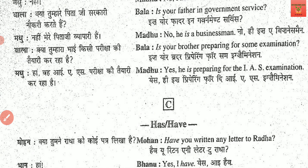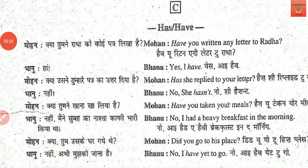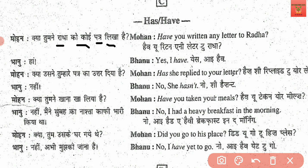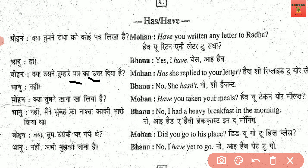Let's see the next conversation in which we will use has and have. Kya tumne Radha ko koi patr likha hai? 'Koi' means some or any, 'patr' means letter, 'likha' means written. Have you written any letter to Radha? Yes, I have. Kya usne tumhare patr ka uttar diya? 'Uttar' means answer. Has she replied to your letter? No, she hasn't.